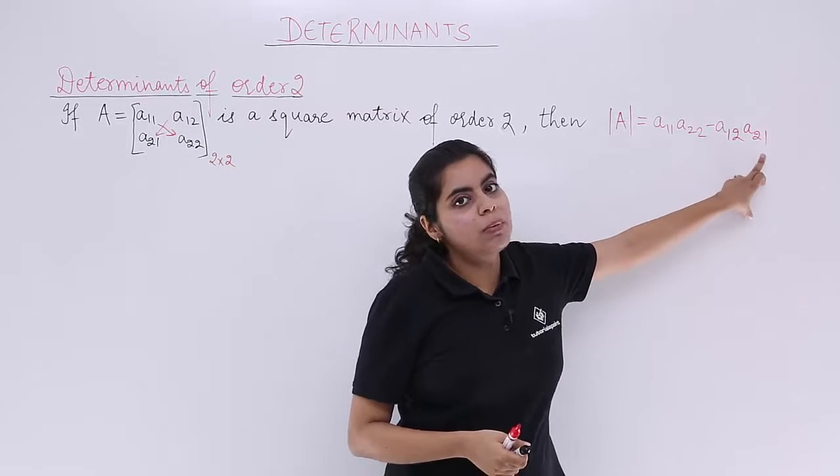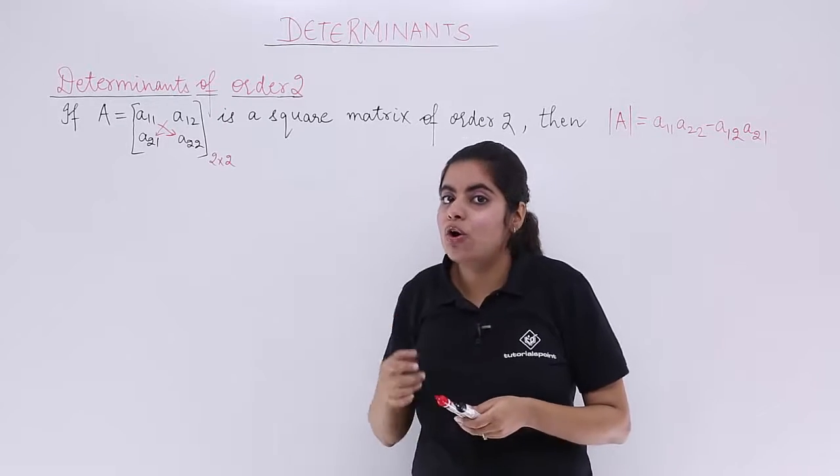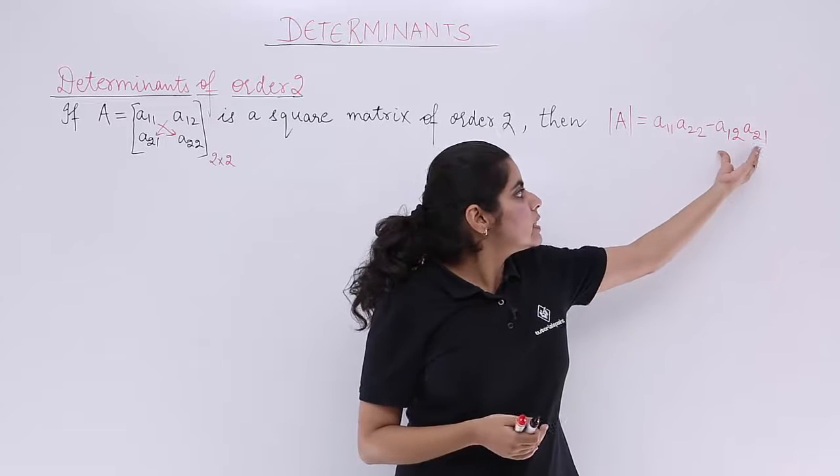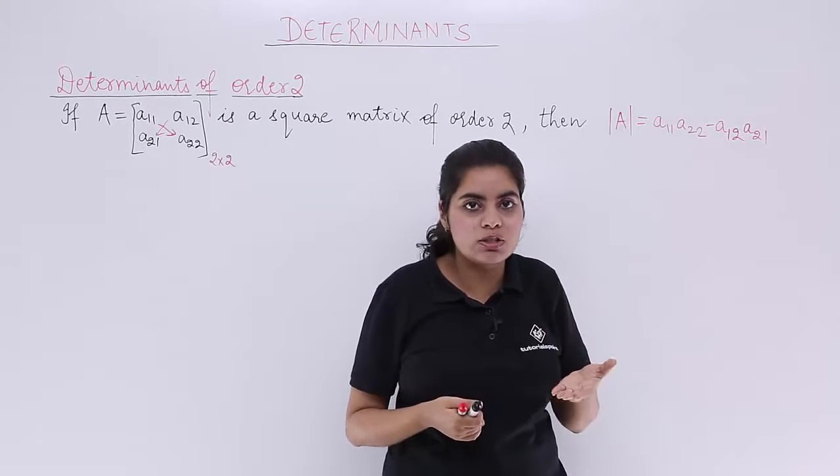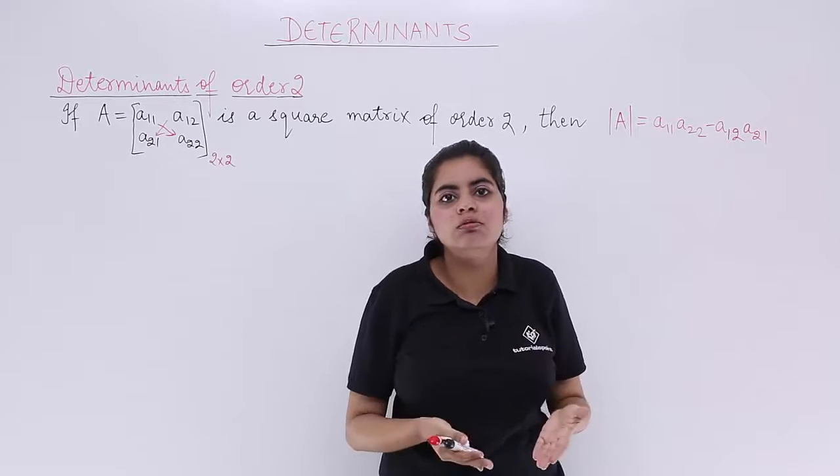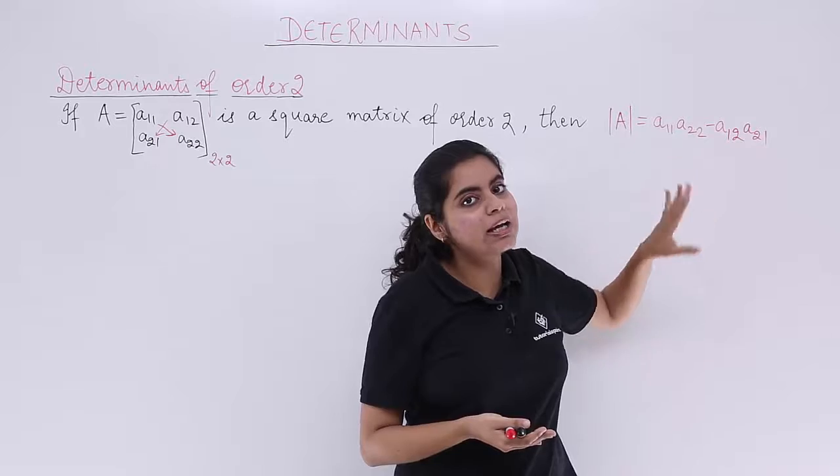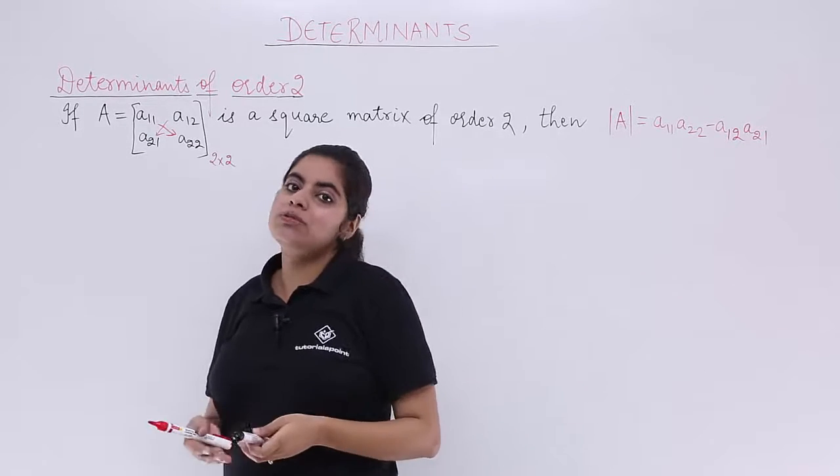So it is a12 multiply a21. Another thing that I want to tell you is that you can also cross multiply from downwards because see, this is actually a product. So 2 times 3 if you do is also 6. If you do 3 times 2, that is also 6. So if we have a22 multiply a12, again that will give you the same answer. Let's see some examples and things will become more clear.